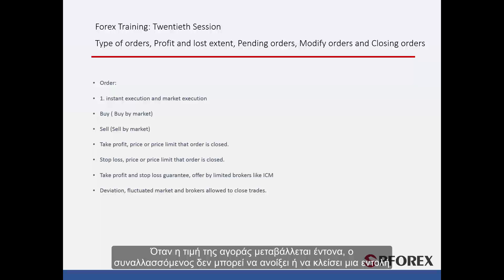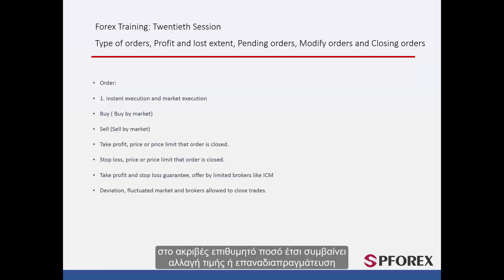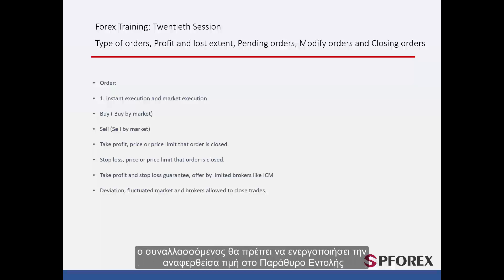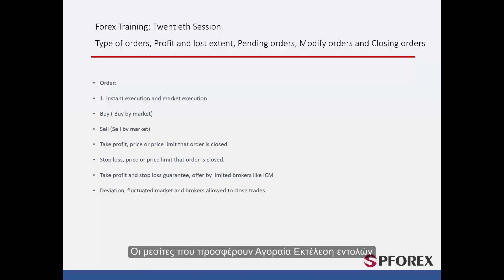When market price fluctuates extremely, a trader cannot open or close an order at the exact desired amount. Thus, price change or re-quote happens. To allow a broker to close or open an order at an approximate price close to the desired price, traders should enable the quoted price option in the order window. This option is available on brokers which provide instant execution orders. Brokers who represent market execution orders already apply this option on all orders.